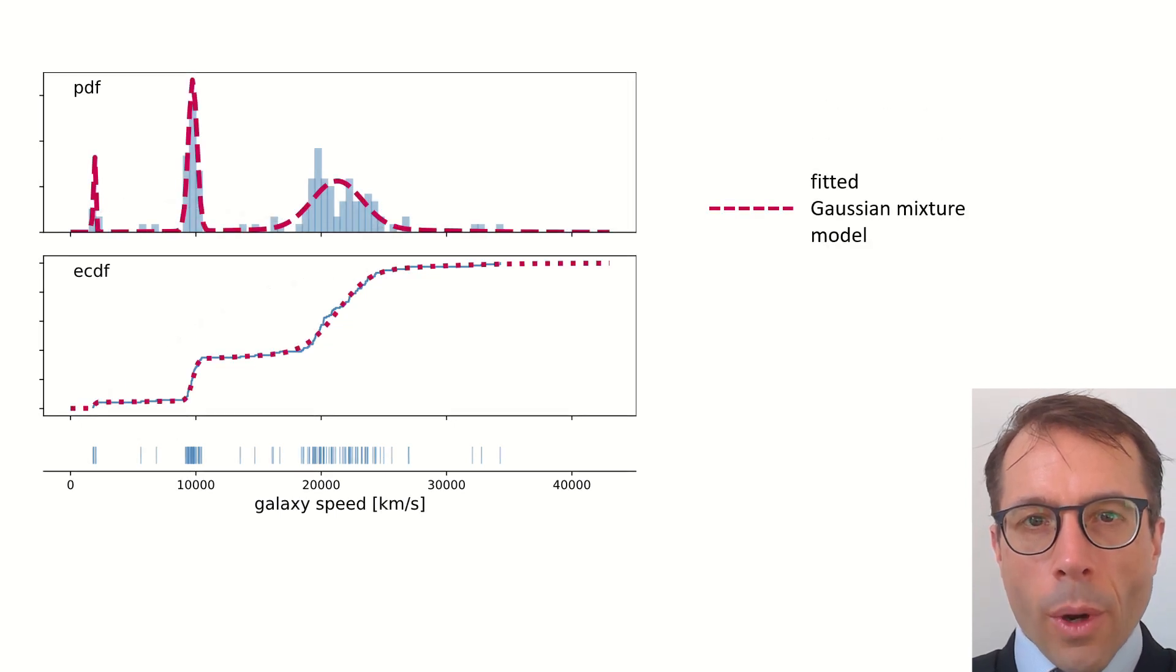And here's our other distribution, modelling it as a Gaussian mixture random variable. The random variable's PDF looks like it fits much better, and its CDF tracks the empirical CDF of the dataset very closely. This is what a good fit looks like.